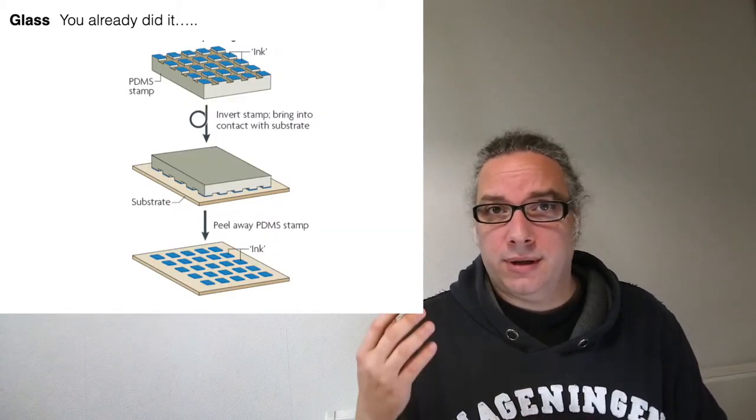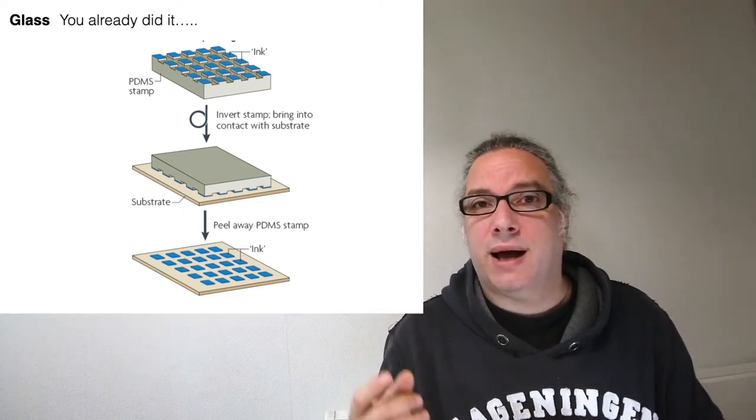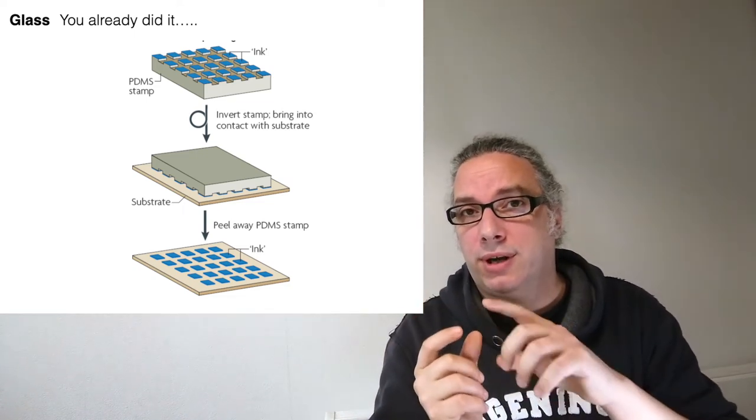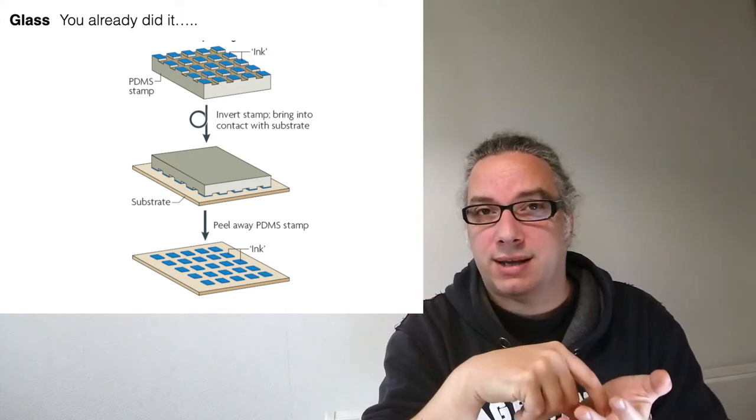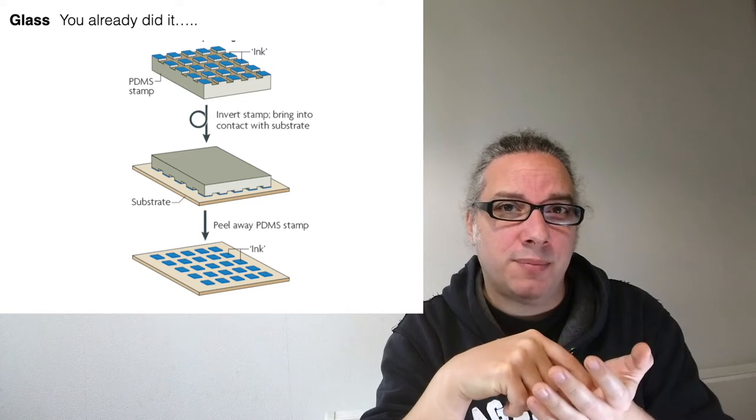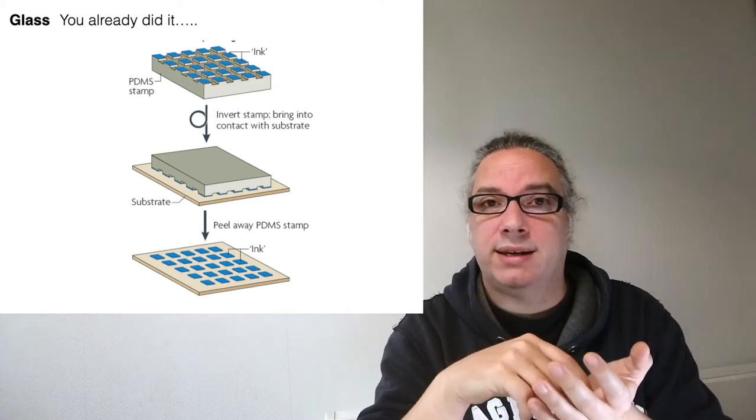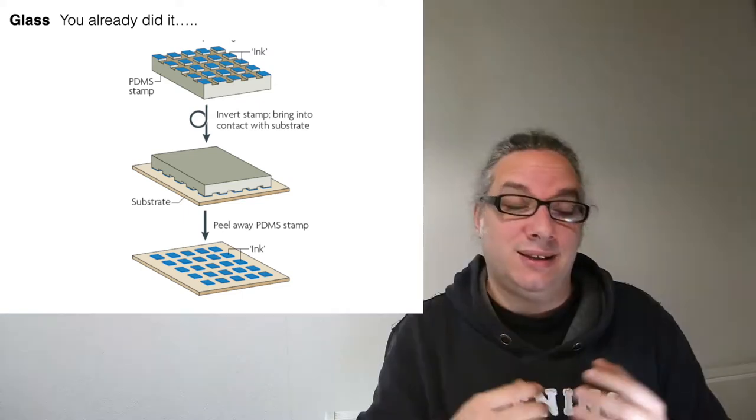Micro contact printing, if you remember, works just by having a small stamp in PDMS. You put your ink, which is your molecule on top, and then you just physically stamp it on glass.